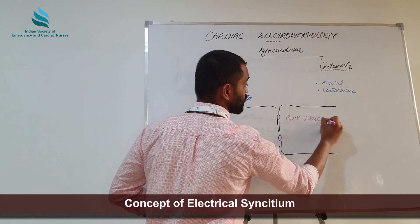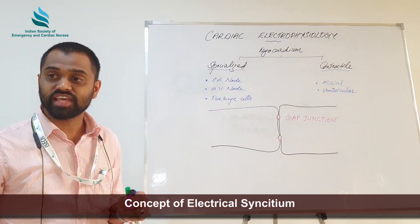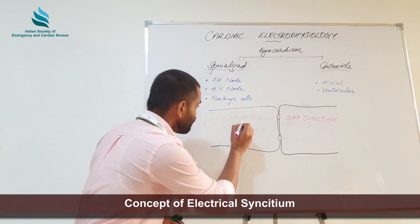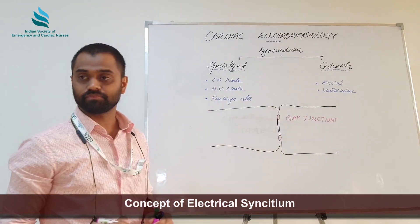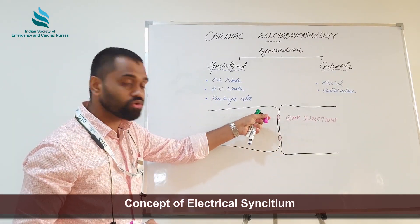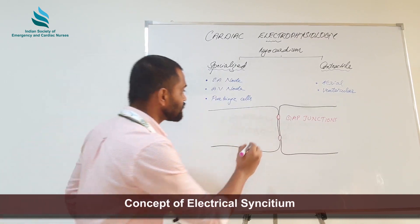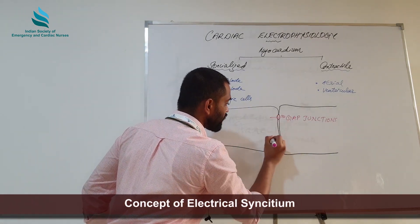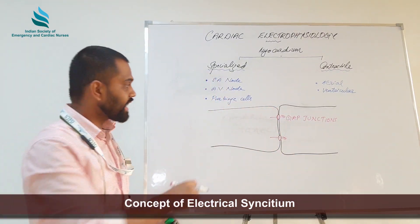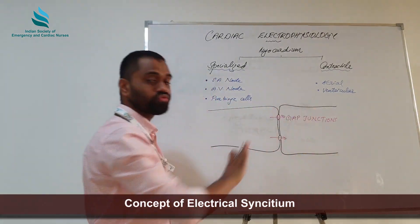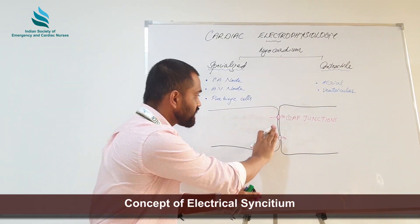What is the property of these gap junctions? If we have free cations moving through the intracellular fluid of one cell, they can easily communicate through the gap junction to the adjacent cell. So cations can easily move from one cell to the adjacent cell through these gap junctions.